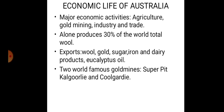Australia supplies 95 percent of its wool production to different parts of the world, utilizing only 5 percent domestically. Australia has various industries that manufacture goods exported worldwide, including gold, sugar, iron, dairy products, and eucalyptus oil — also known as medicinal oil.